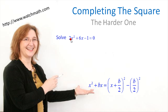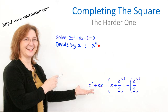How can we get rid of this coefficient of 2? It is quite easy — we just need to divide this equation by 2. Dividing by 2, we get x squared plus 3x minus 1 half equals 0.